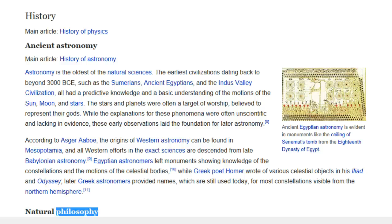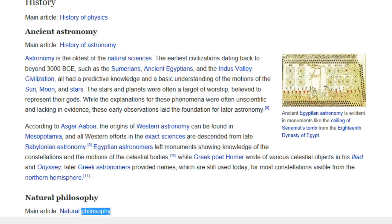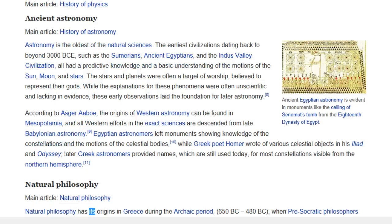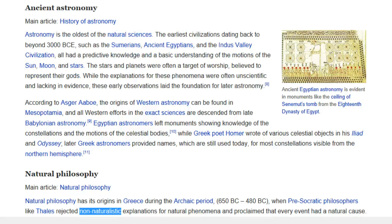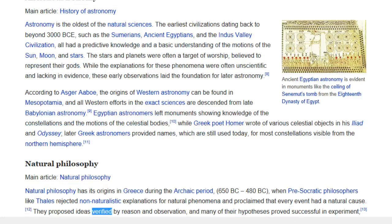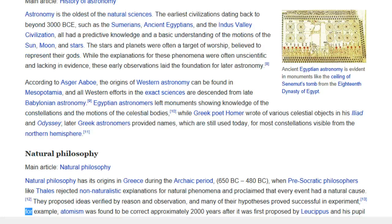Natural Philosophy. Main article, Natural Philosophy. Natural Philosophy has its origins in Greece during the Archaic period, 650 BC to 480 BC, when pre-Socratic philosophers like Thales rejected non-naturalistic explanations for natural phenomena and proclaimed that every event had a natural cause. They proposed ideas verified by reason and observation, and many of their hypotheses proved successful in experiment. For example, atomism was found to be correct approximately 2,000 years after it was first proposed by Leucippus and his pupil Democritus.